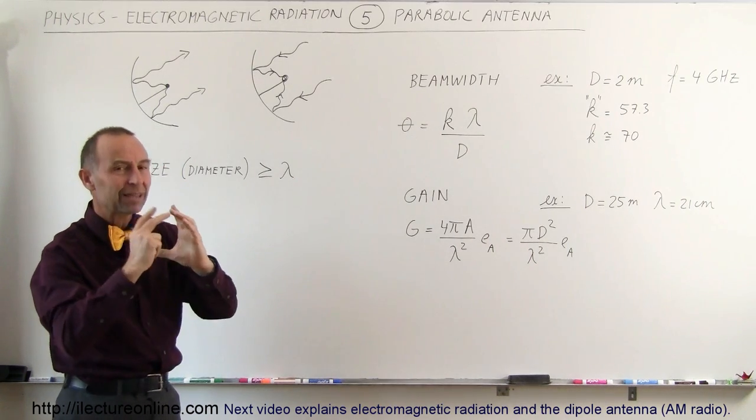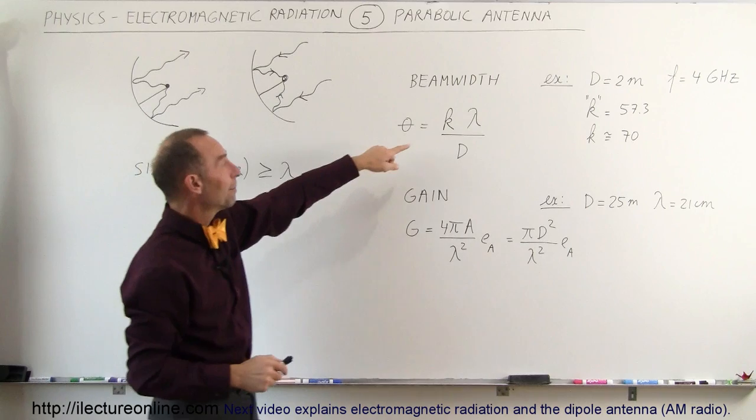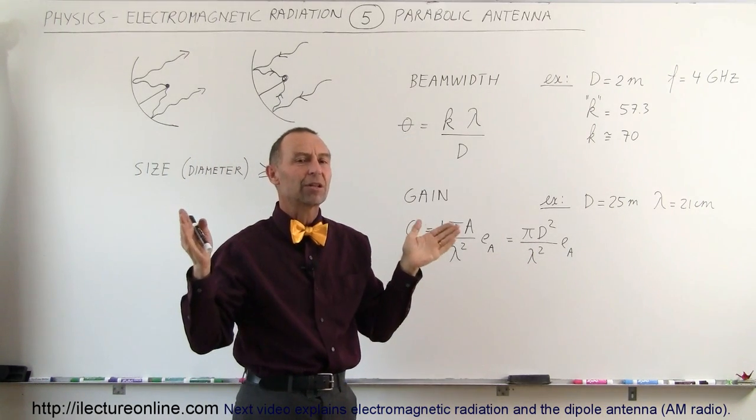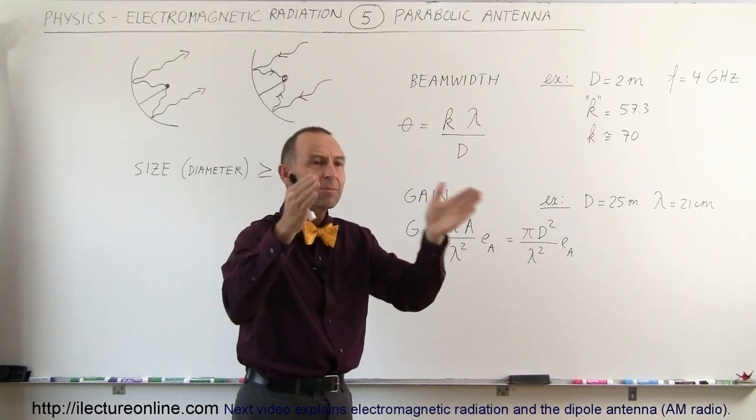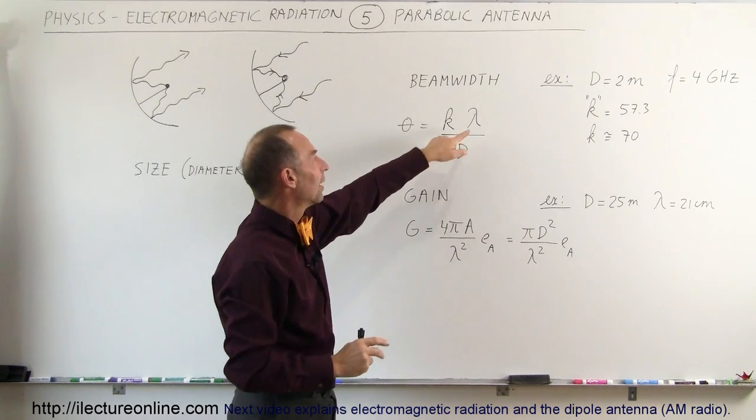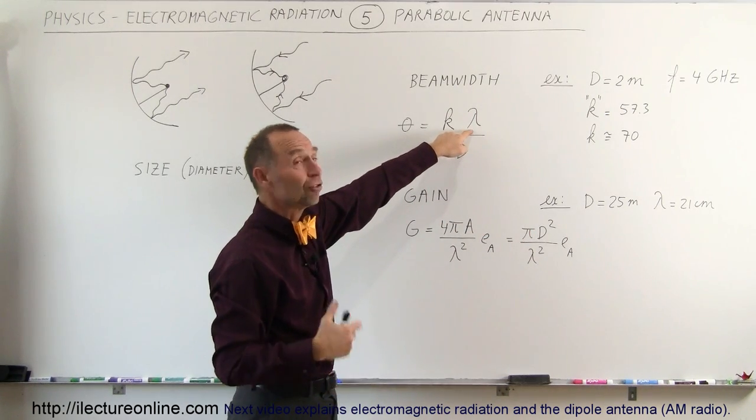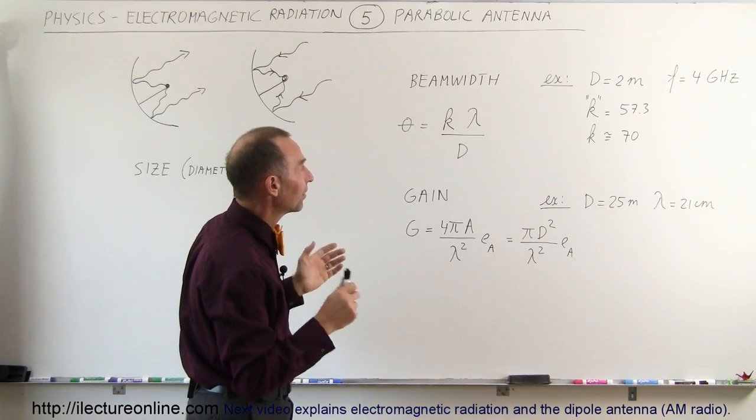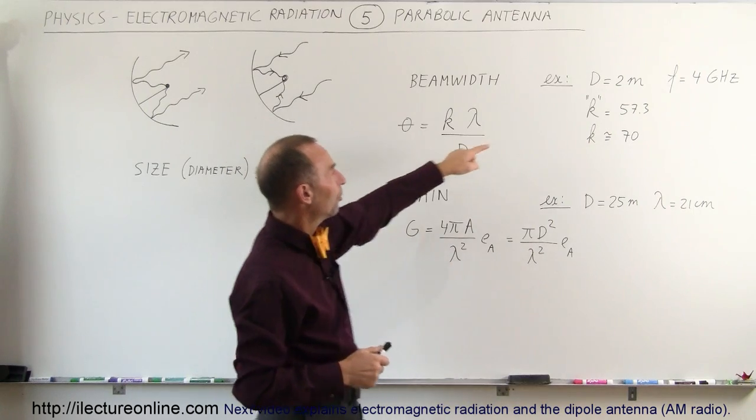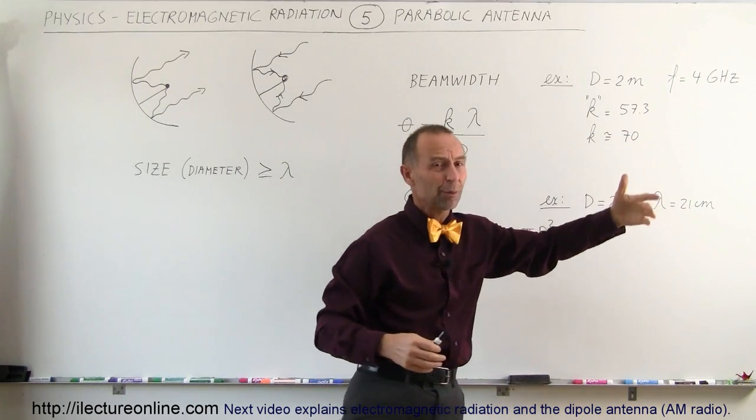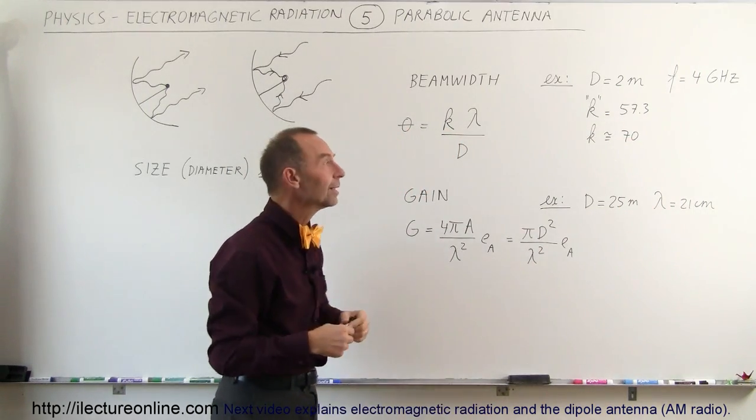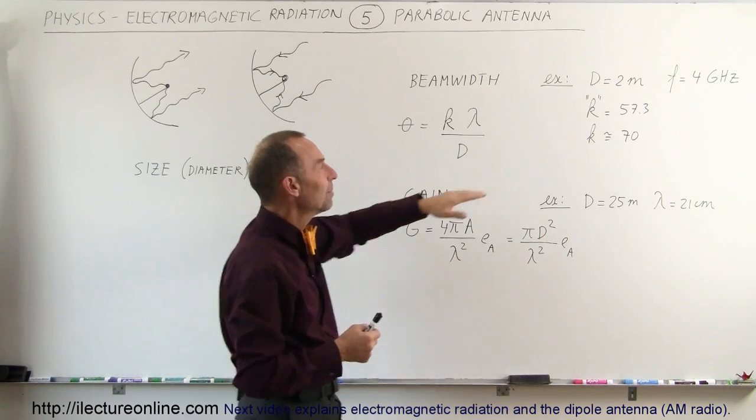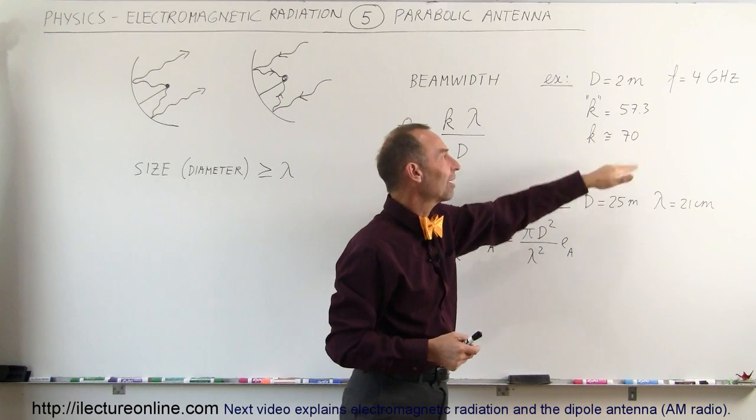The beamwidth of that particular beam can be calculated by taking what we call K - the efficiency of how the parabolic shape can put the beam into a single pencil beam shape. Lambda is the wavelength of the radiation you transmit and D is simply the diameter of the parabolic shape antenna. Normally a perfect K would be 57.3 which is the number of degrees in a radian. K the efficiency is a little bit less for a typical parabolic shape, so K is about 70.